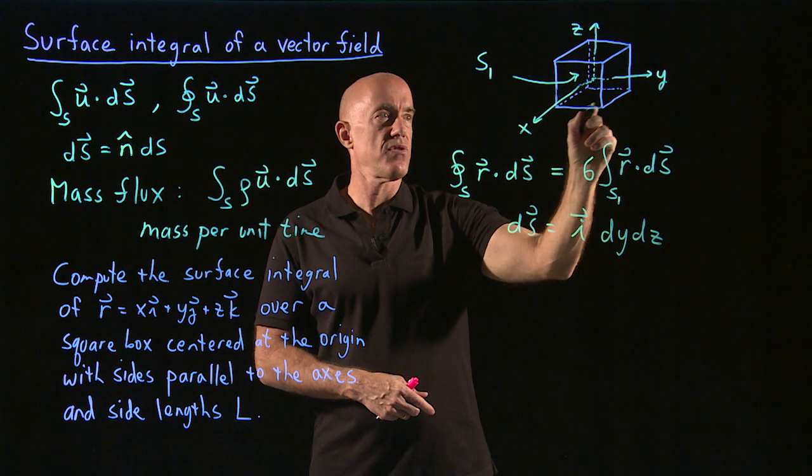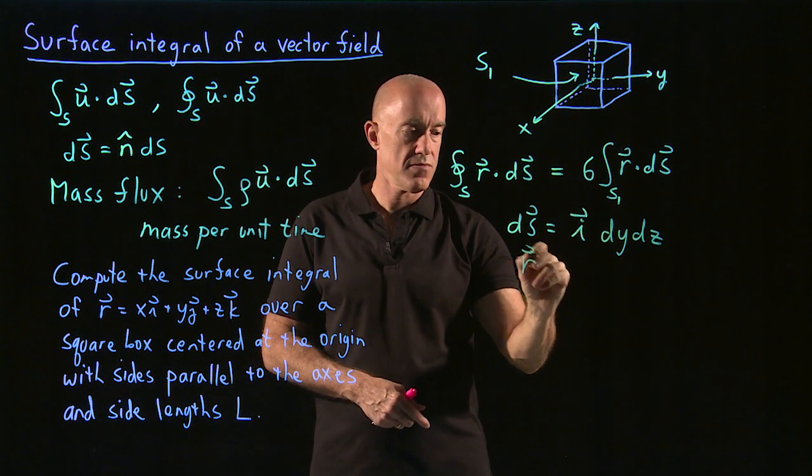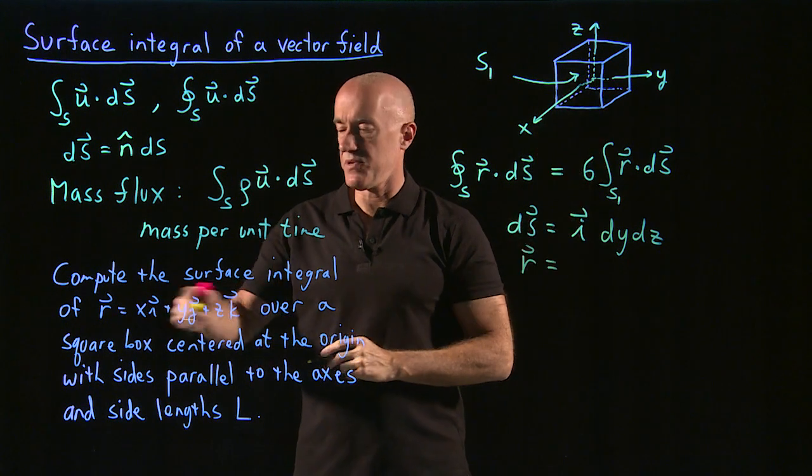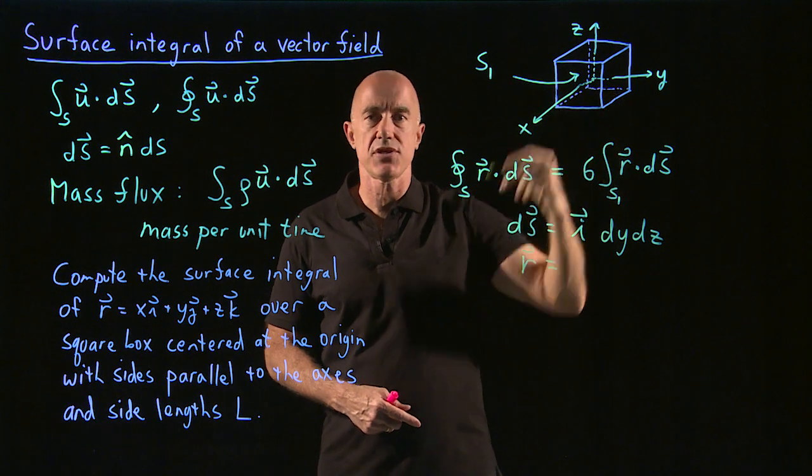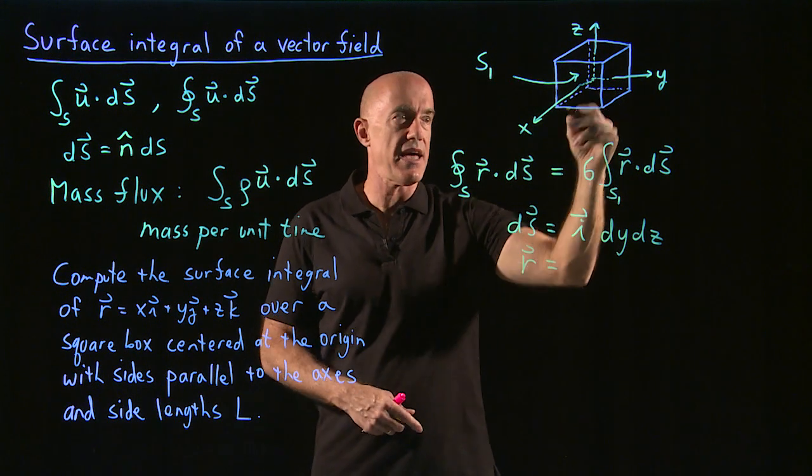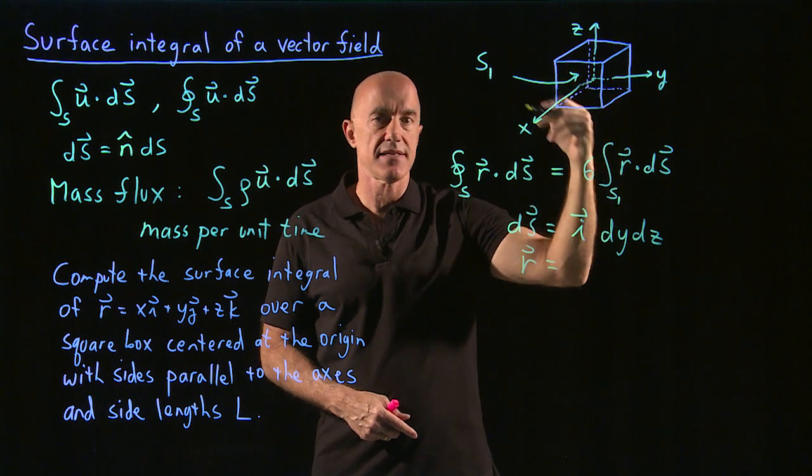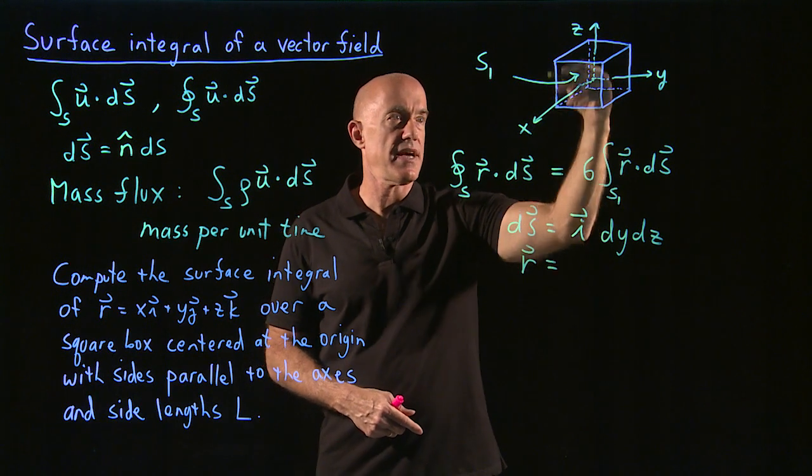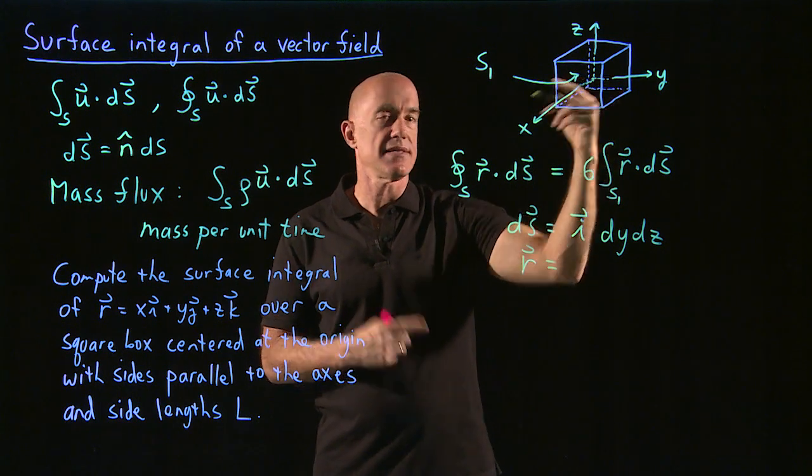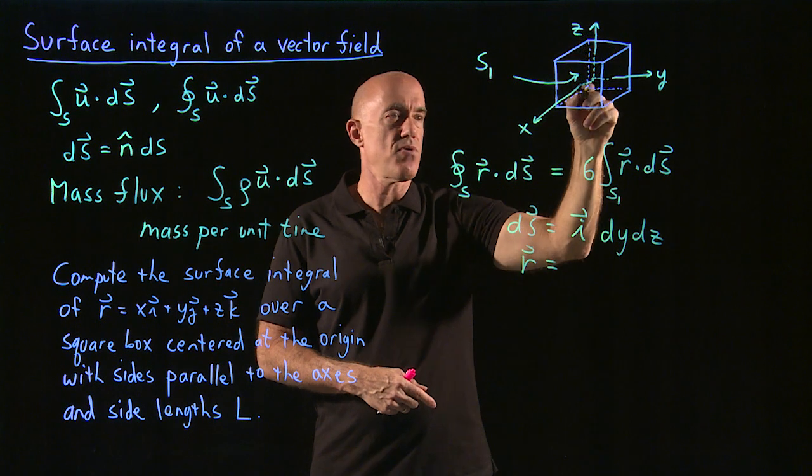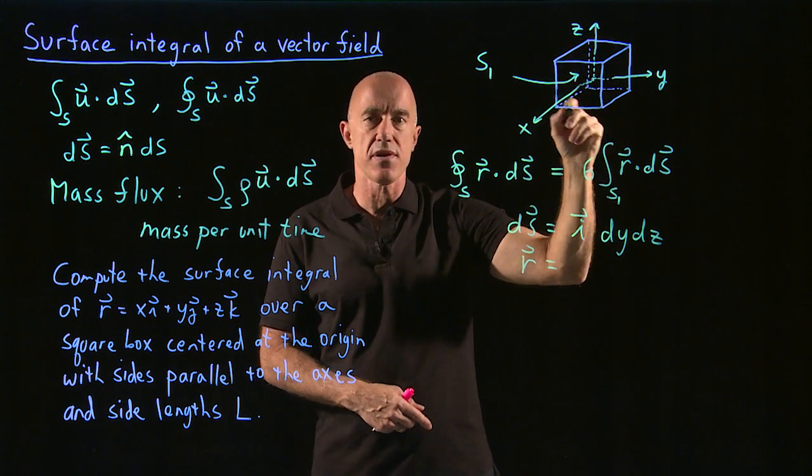And what is the value of r on that face? So r is the position vector. The value of the x position is always the same for every ds element on this face. X is going to be fixed. The x coordinate is fixed. Because the length of the box is L and the coordinate system is in the midpoint of the box.